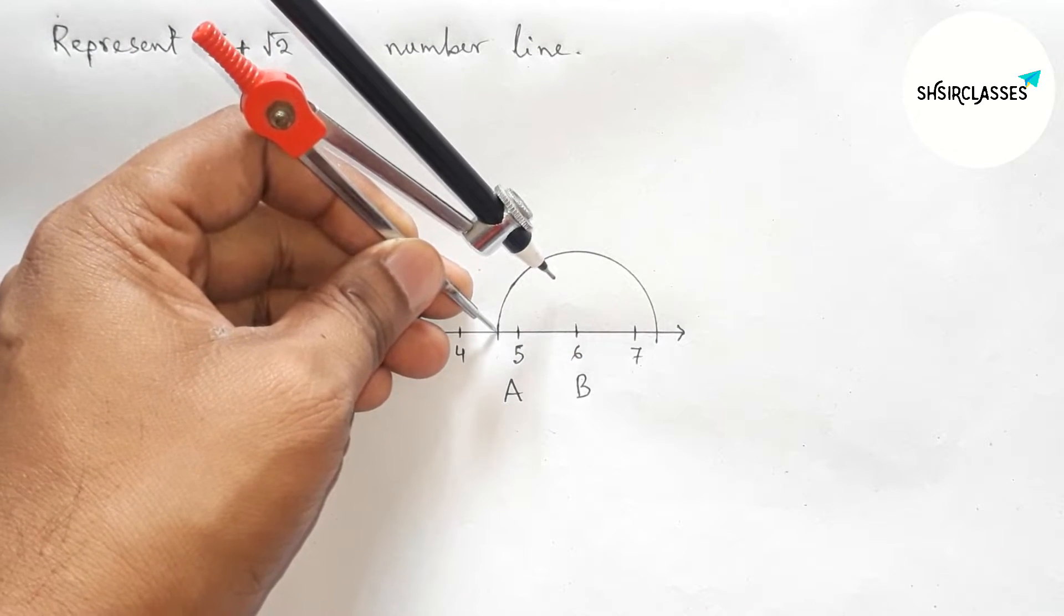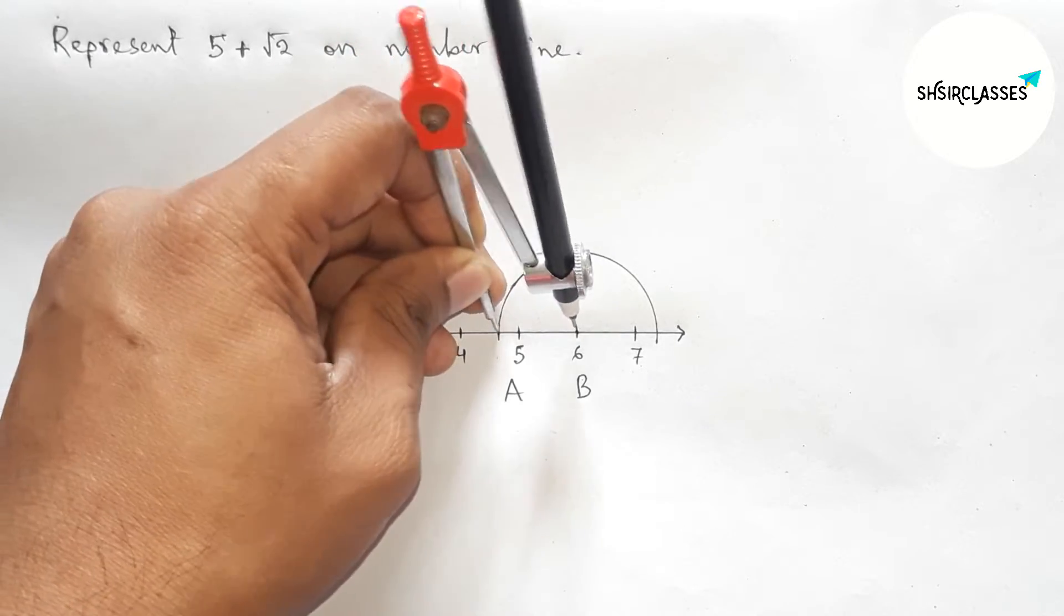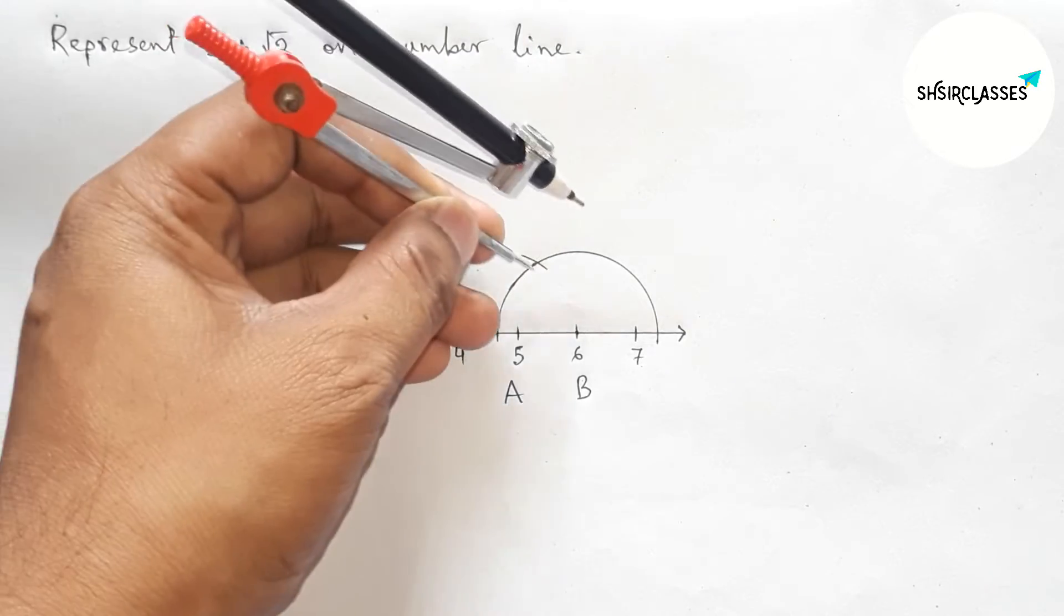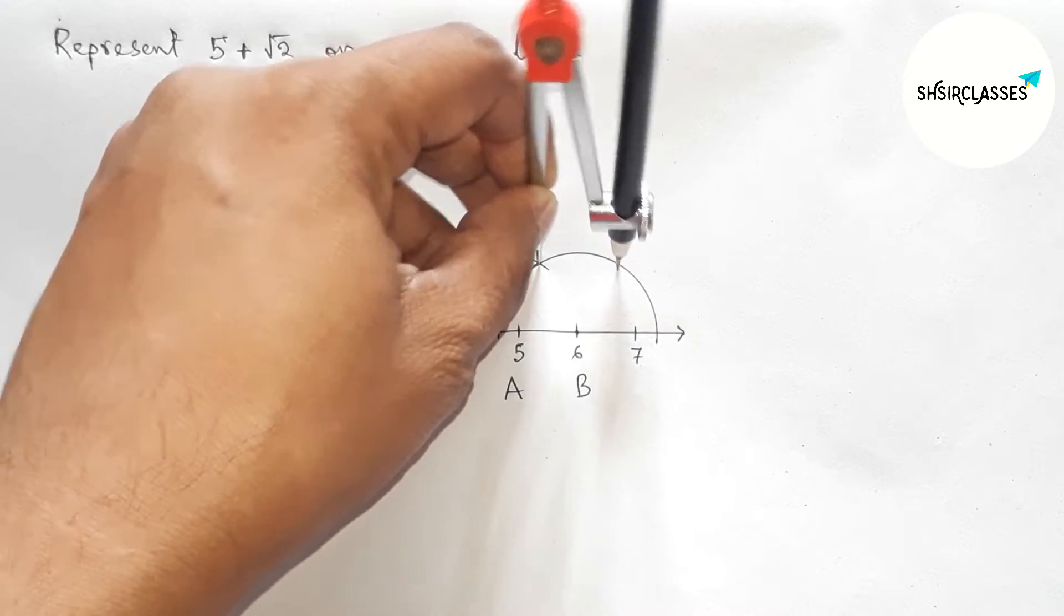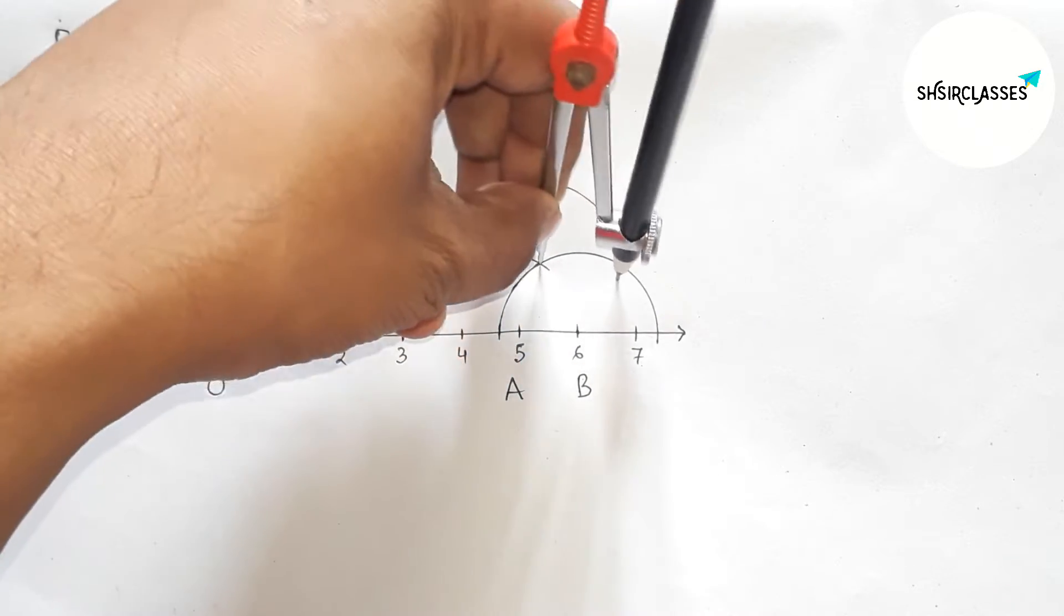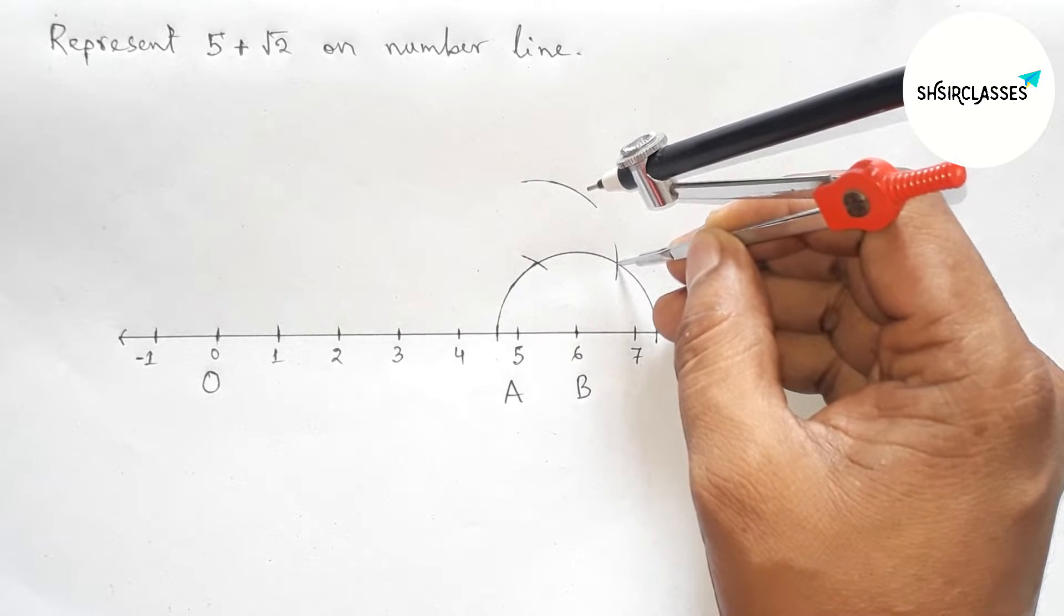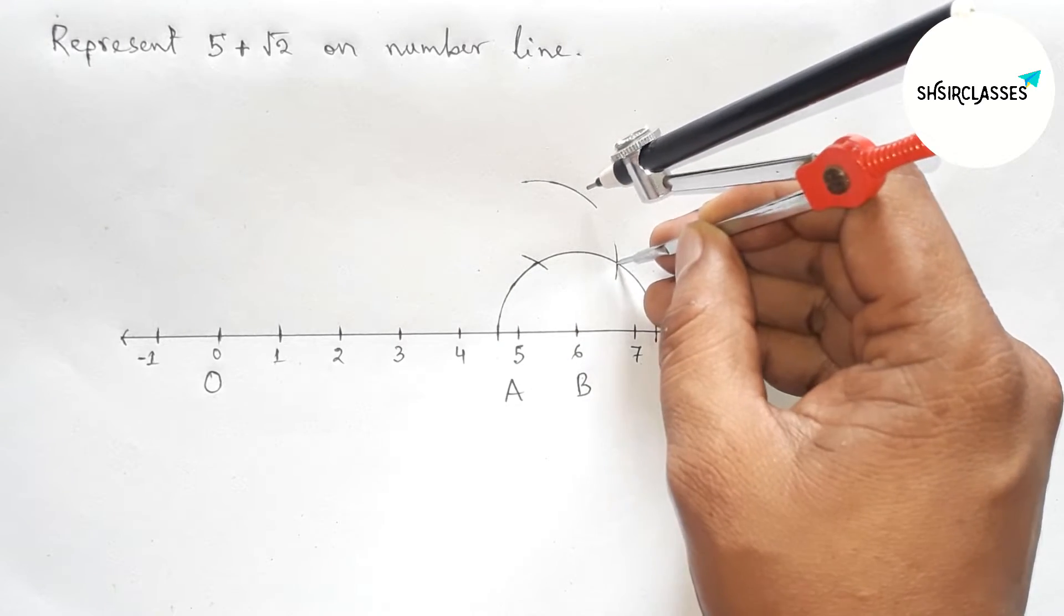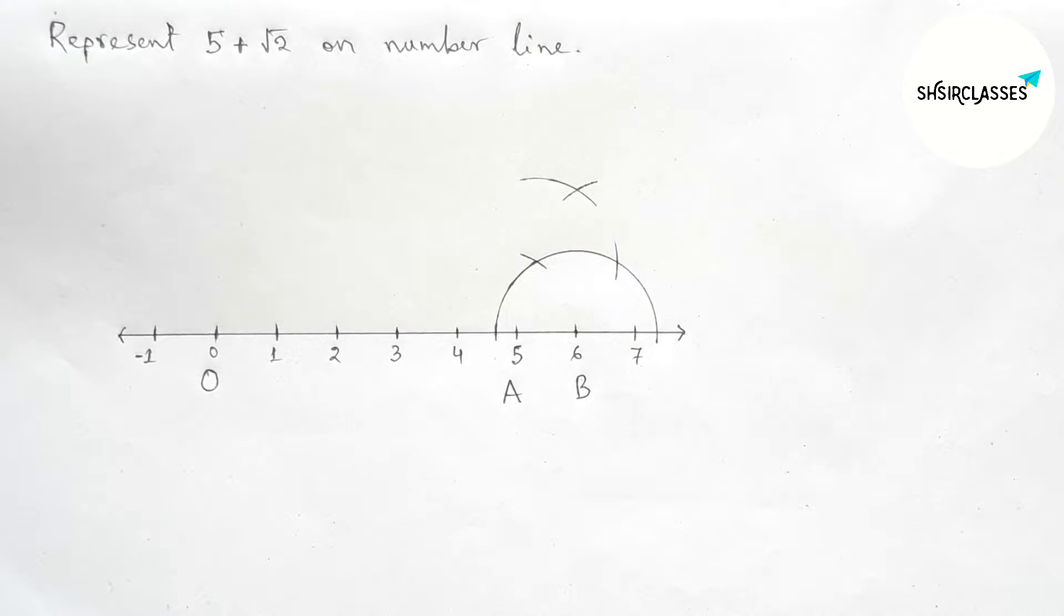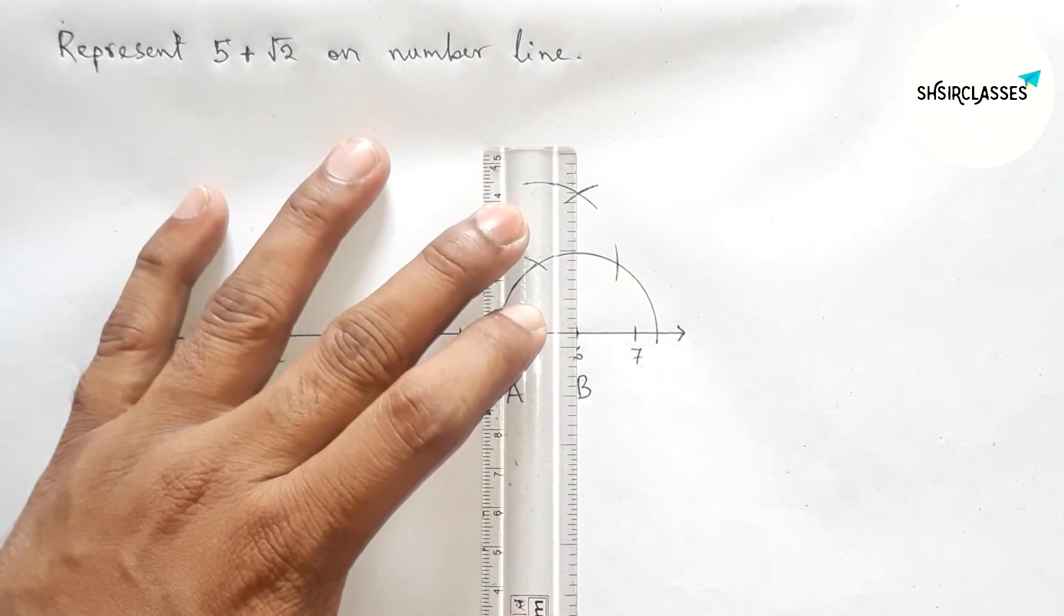Now putting the compass here and taking same length and cut here. Now putting the compass here and cut here, and drawing an arc here again with same length, putting the compass here and cut here.